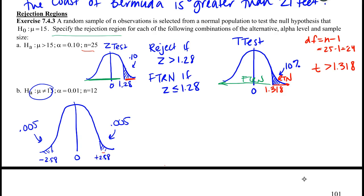So we would reject if we had a Z-score that was less than negative 2.58 or greater than a positive 2.58. You could express this as the absolute value of Z being greater than 2.58 if you want.